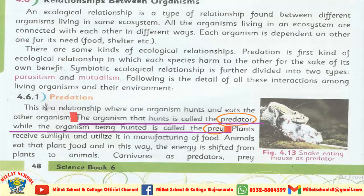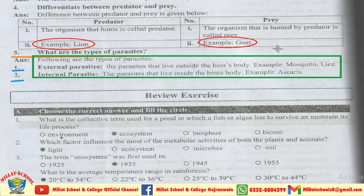Dear students، page number 48 پر topic 'predation' کی second line سے آپ کا answer start ہوگا: 'The organism that hunts is called the predator, while the organism being hunted is called the prey.' یہاں تک answer 3 marks کا ہے۔ اس کے بعد آپ نے predator کی example کرنی ہے. Example of prey is goat.